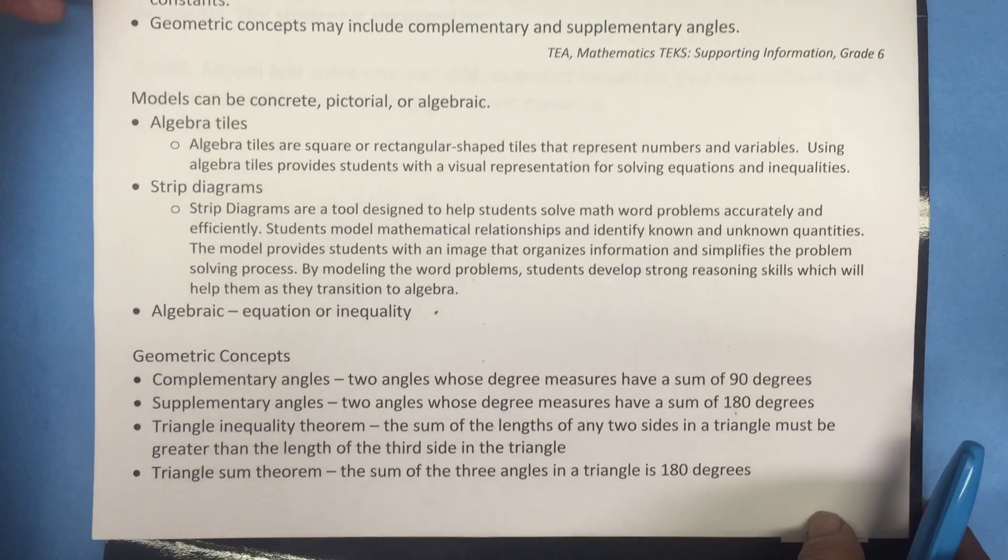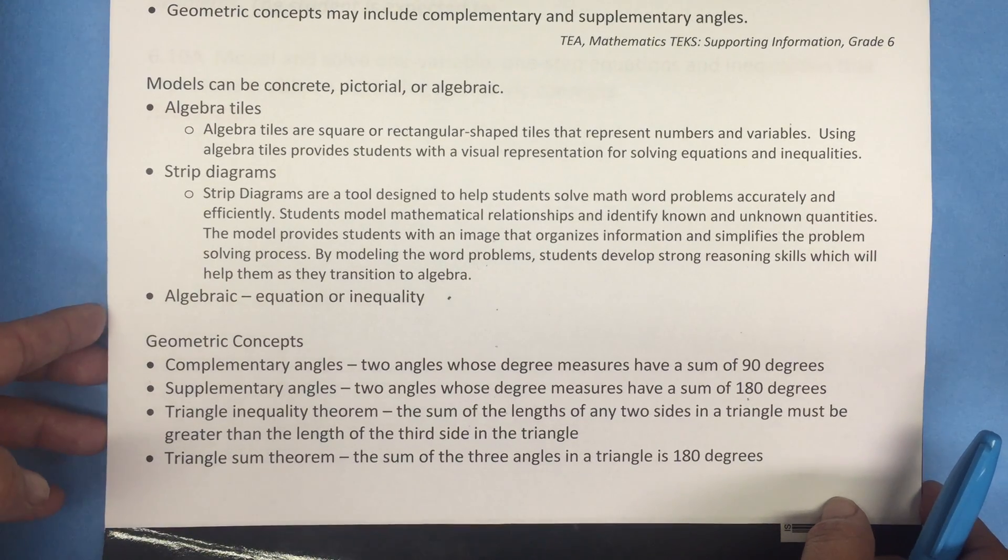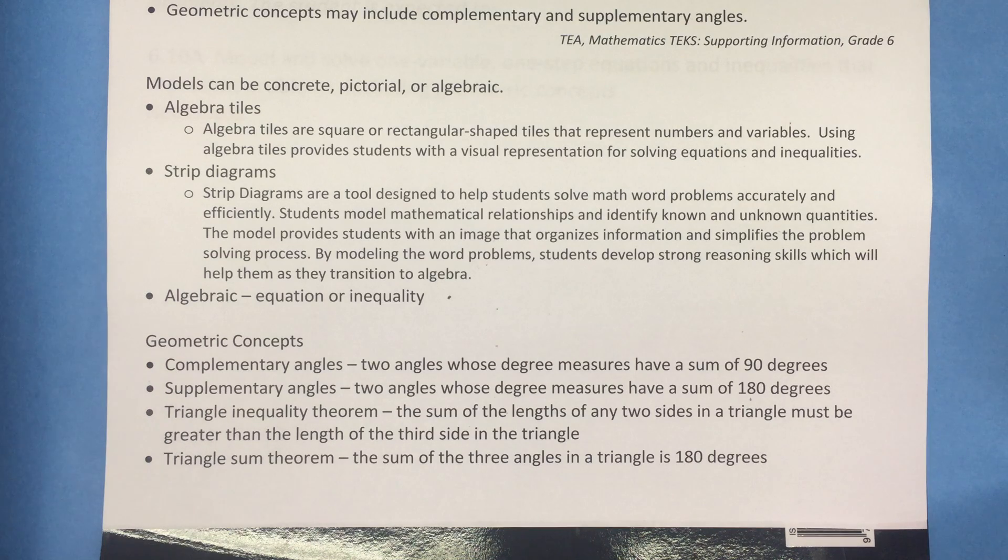Let's talk more in depth about geometric concepts. Complementary angles are two angles whose degree measures have a sum of 90 degrees. Supplementary angles are two angles whose degree measures have a sum of 180 degrees.